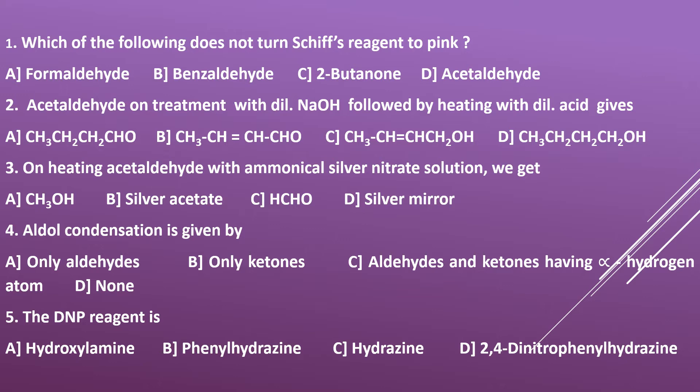Fourth question: aldol condensation is given by — options: A) only aldehydes, B) only ketones, C) aldehydes and ketones having alpha hydrogen atom, D) none. Aldol condensation is given by aldehydes and ketones which possess alpha hydrogen atom. So the right option is C.